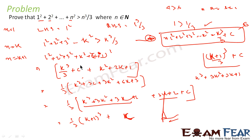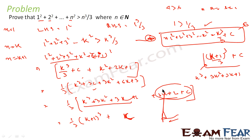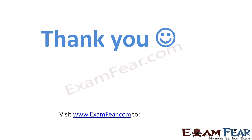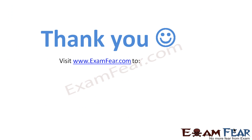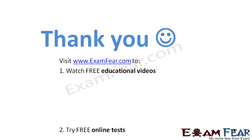We used k cubed by 3 plus c as the value of 1 squared plus 2 squared plus ... plus k squared, then expanded (k plus 1) squared. We wanted to form the expression in the shape of (k plus 1) cubed by 3, so we extracted that part and treated the rest as constant, proving the result equals 1 by 3 times (k plus 1) cubed plus a constant.